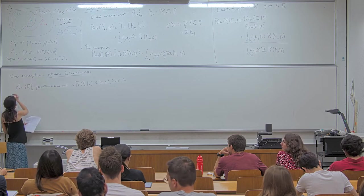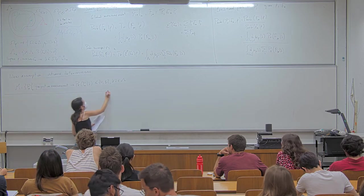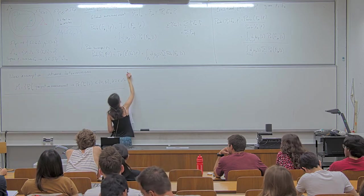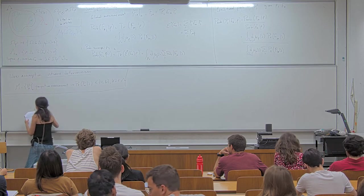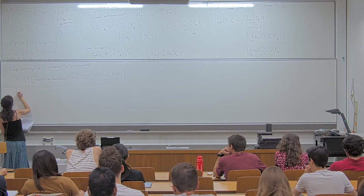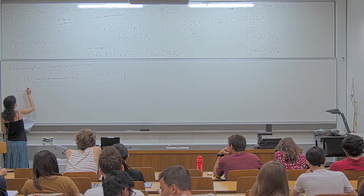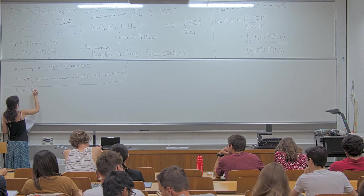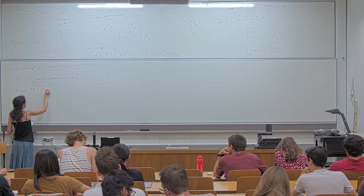We now introduce a new assumption: outcome determinism. In the general case, for an ontic state lambda, the response function p_k of lambda can be any value in [0,1]. The new assumption says that if we have a projective measurement, then p_k of lambda can only be zero or one. This looks like a very strong assumption — we'll see later how to derive it. But the meaning is: for projective measurements, all the uncertainty is shuffled into the green preparation set, and the response functions just tell us whether lambda is inside or outside the red set.